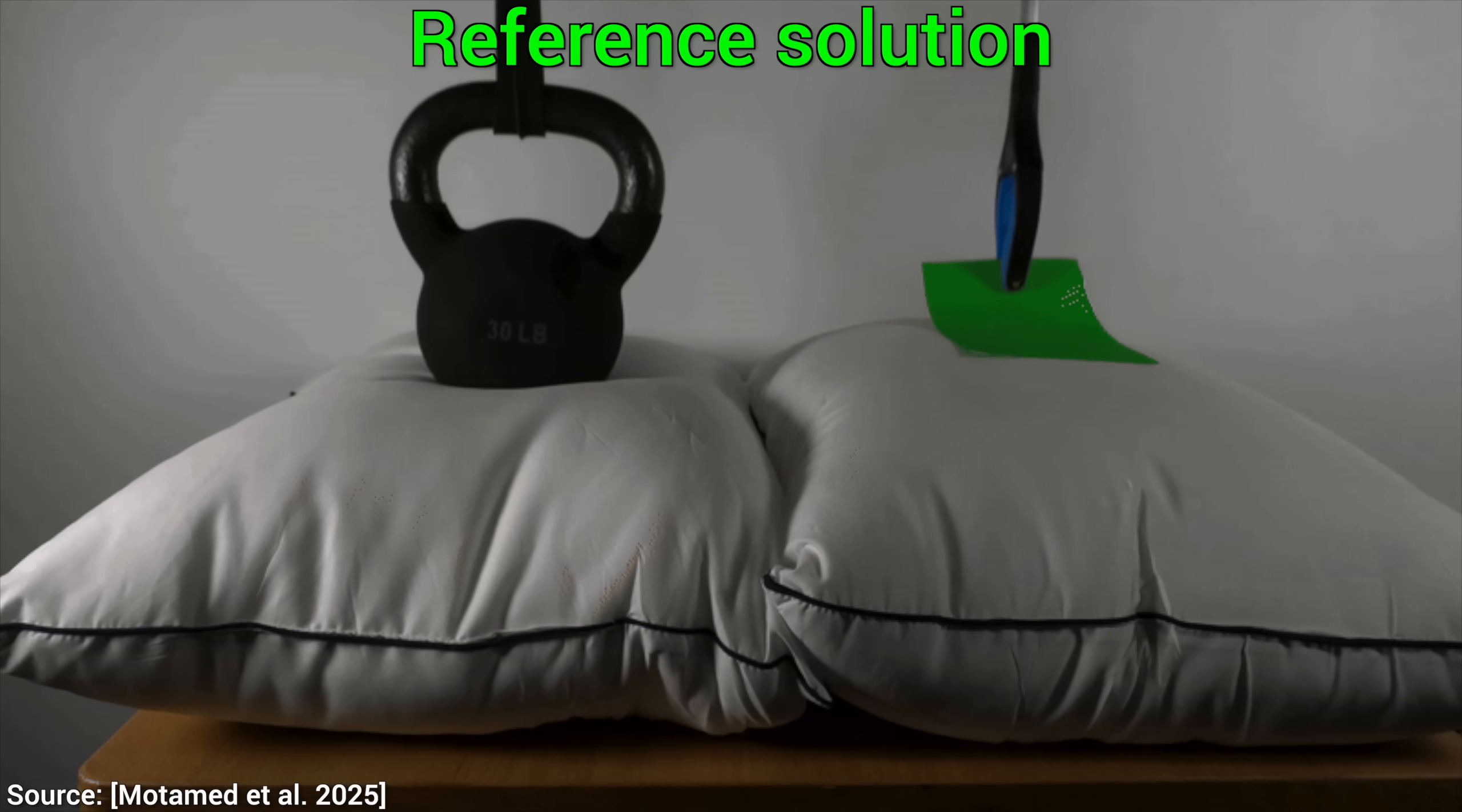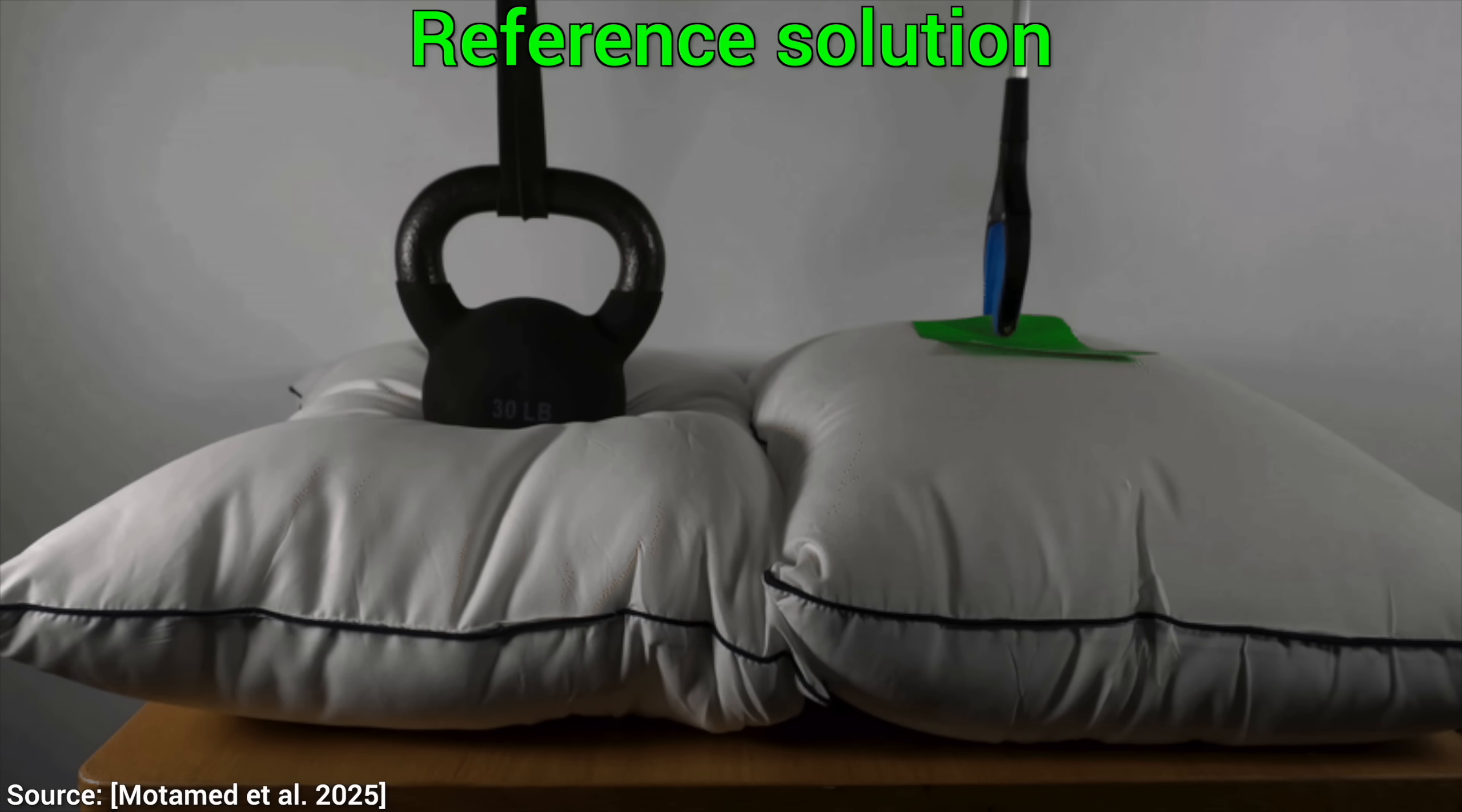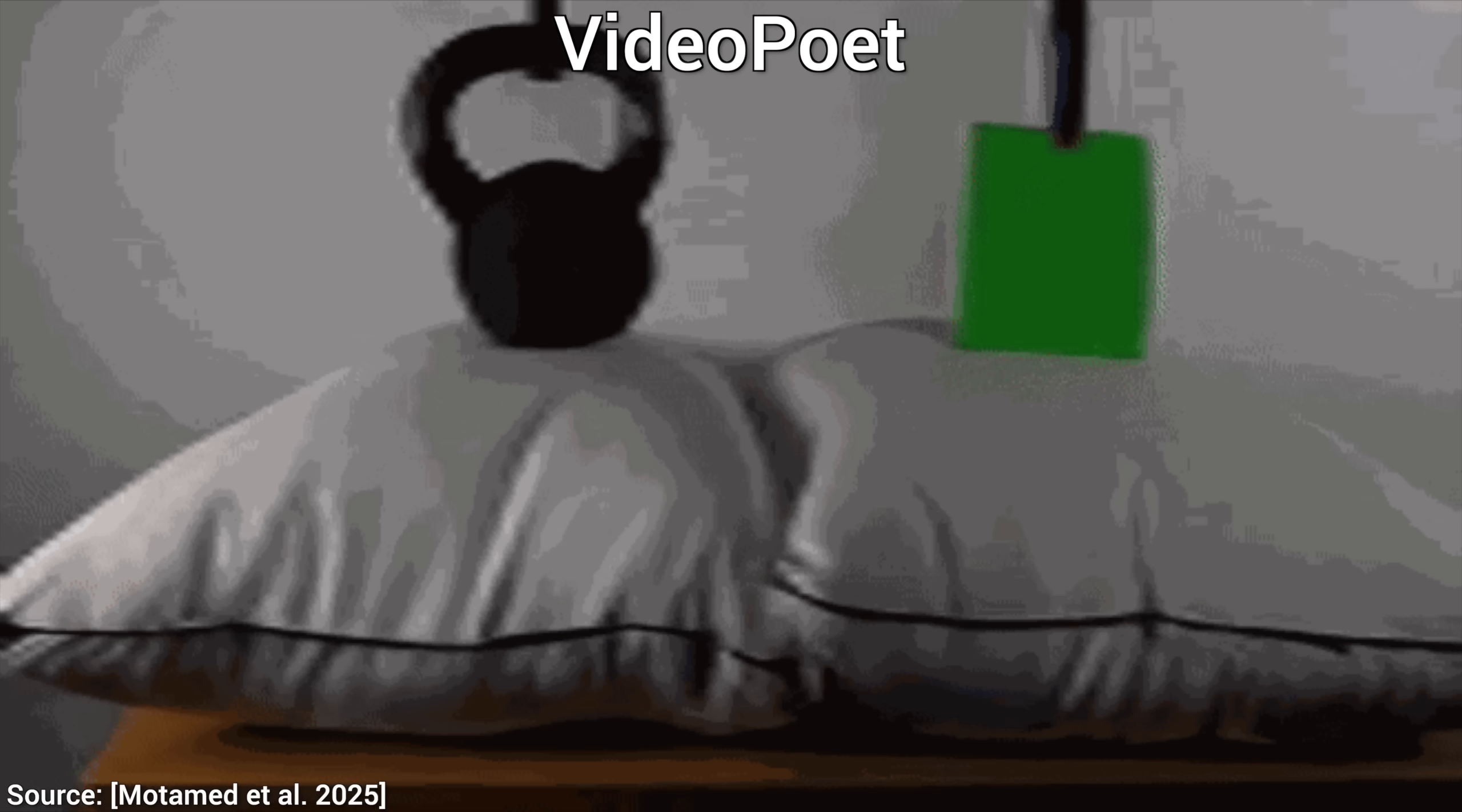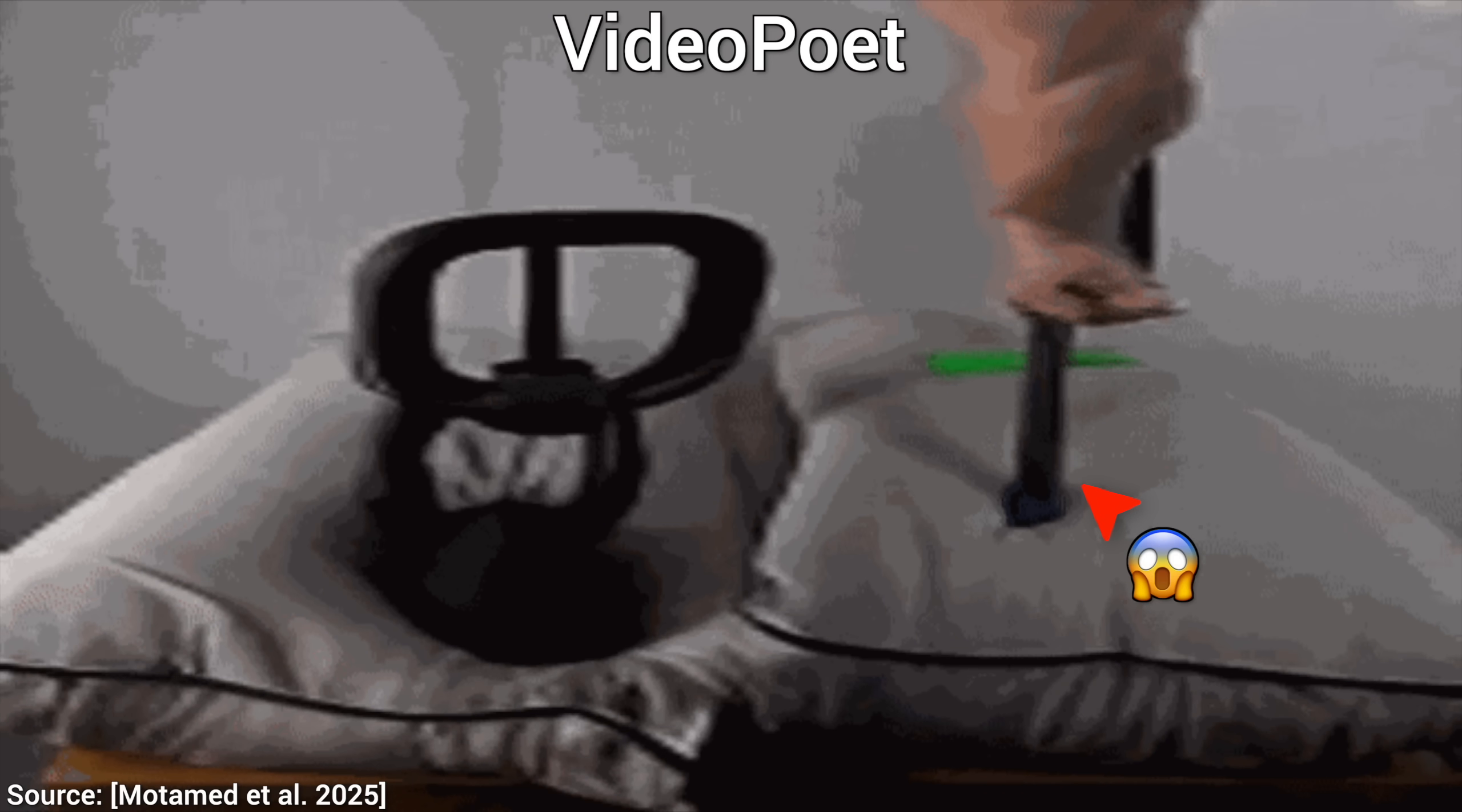Three, light versus heavy. A classic. We expect that the heavy kettlebell object will leave a larger imprint on the pillow than a light scrap of paper. Easy, right? Let's see together. VideoPoet says choose me, the evil pillow eats the paper and as revenge we then stab it. Yes, that is what will happen.